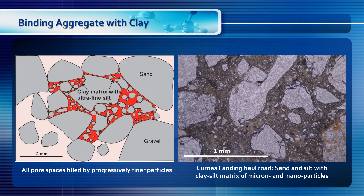In order to achieve maximum densification and binding, good particle size distribution is required, whereby all pore spaces are filled by progressively finer materials. The remaining micropores are then filled by ultra-fine silt and micron- and nanoscale particles of clay, as shown by the red matrix in the diagram on the left. The photomicrograph on the right is from a stabilized road and shows sand and silt particles embedded and cemented in a matrix of ultra-fine silt and clay.